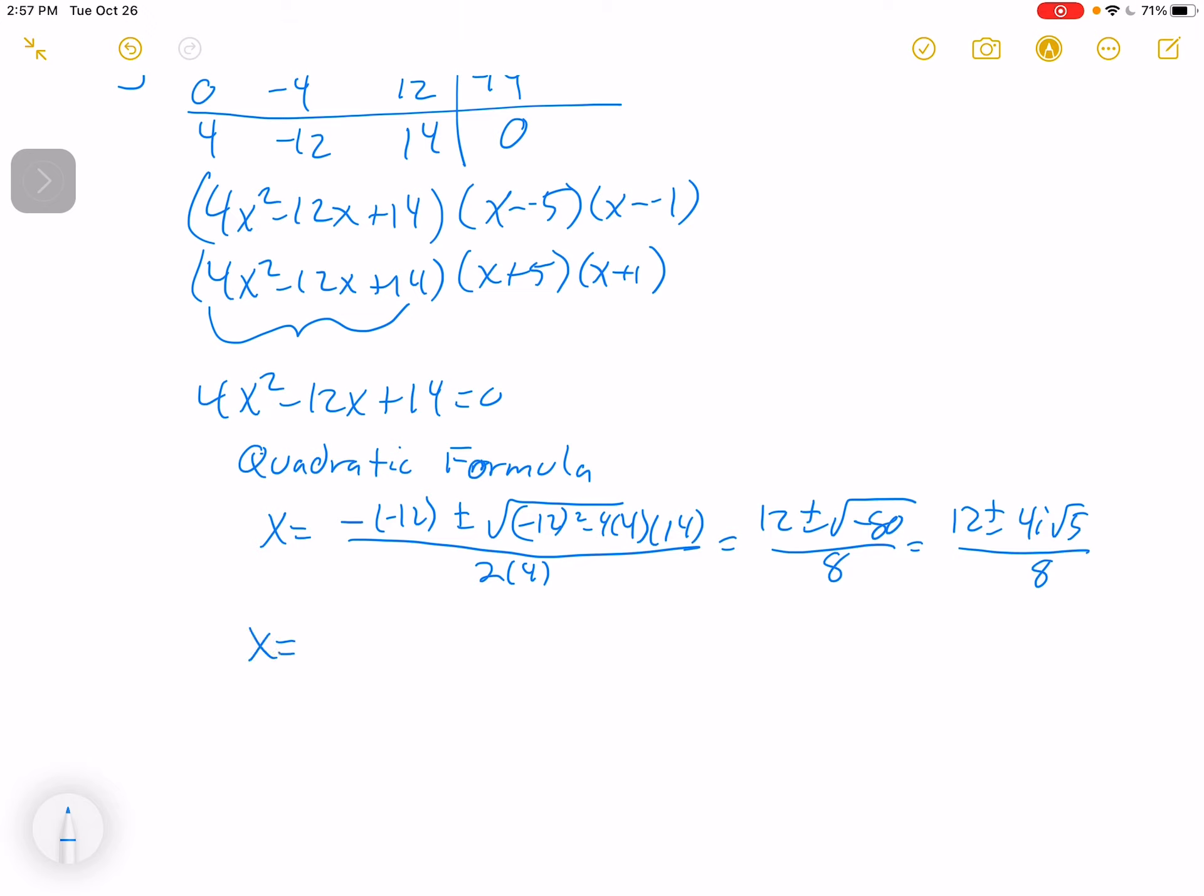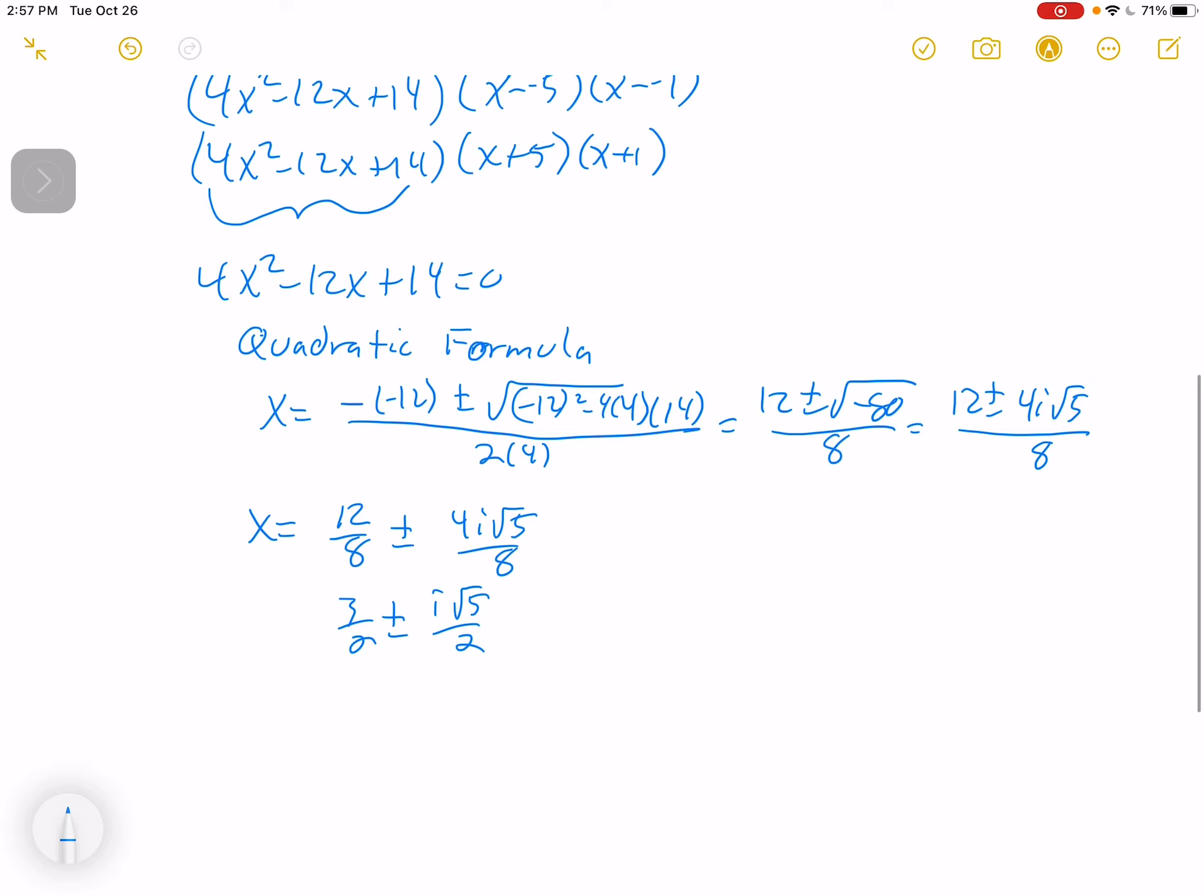And so this can be broken down if you reduce that out. Think of it as 12 eighths plus or minus 4i root 5 eighths. So that's going to be 3 halves plus or minus i root 5 over 2. So our zeros are negative 5, negative 1, 3 halves plus i root 5 over 2, and 3 halves minus i root 5 over 2. Those are your zeros.